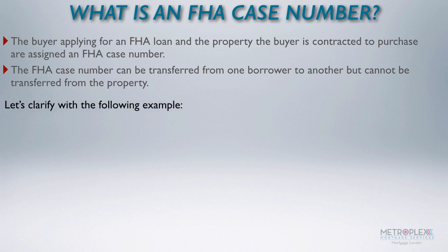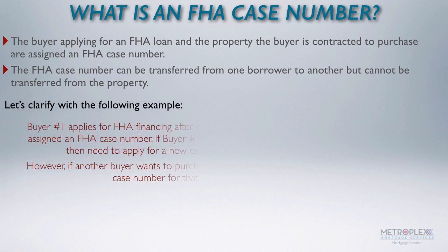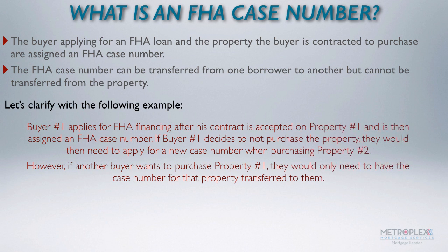Let's clarify with the following example. Buyer number one applies for FHA financing after his contract is accepted on property number one and is then assigned an FHA case number. If buyer number one decides to not purchase the property, they would then need to apply for a new case number when purchasing property number two.